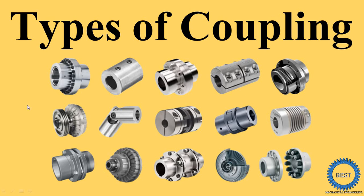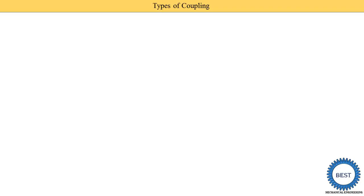In this video I explain various types of coupling. Coupling is generally divided into two categories: the first category is rigid coupling and the second one is flexible coupling.